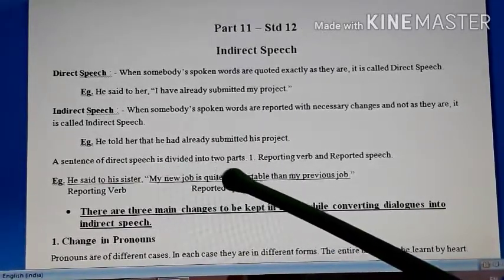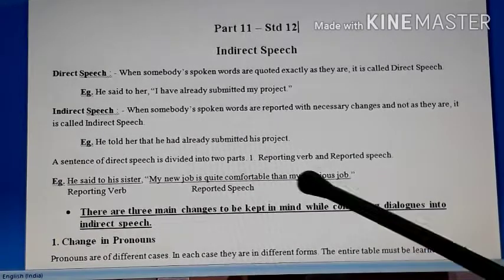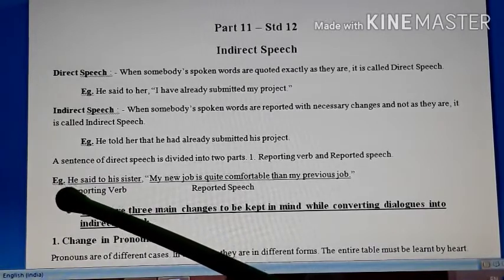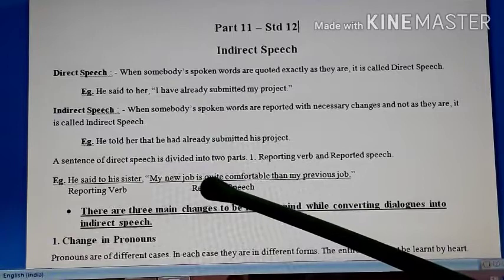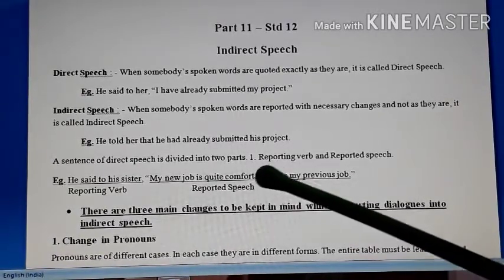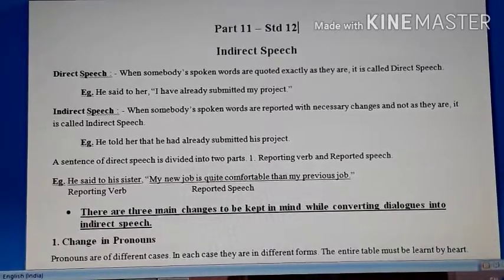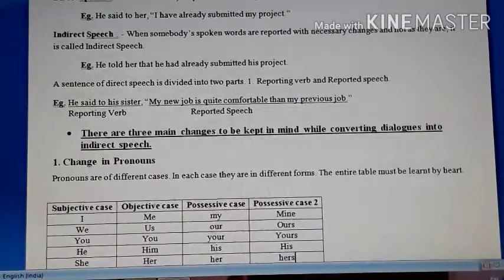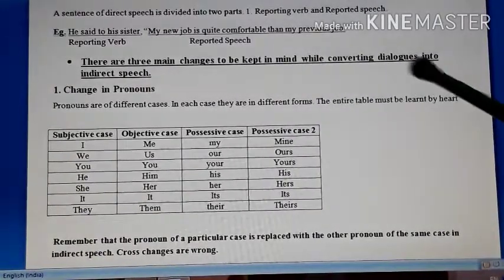A sentence of direct speech is divided into two parts: reporting verb and reported speech. Whenever we do the indirect of any sentence, these two parts would be there. When I say RV or RS, you must understand what they mean. For example, 'He said to his sister' is the reporting verb, and the quoted words 'My new job is quite comfortable than my previous job' are the reported speech, always given in double inverted commas. There are three main changes to be kept in mind while converting dialogues into indirect speech.